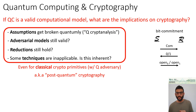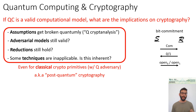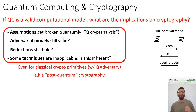After the fact, the sender can reveal the hidden bit along with an opening, and the receiver can validate that opening. If validated, the receiver should be convinced that the bit was decided ahead of time and was not changed between when the commitment was sent and when the opening was sent.